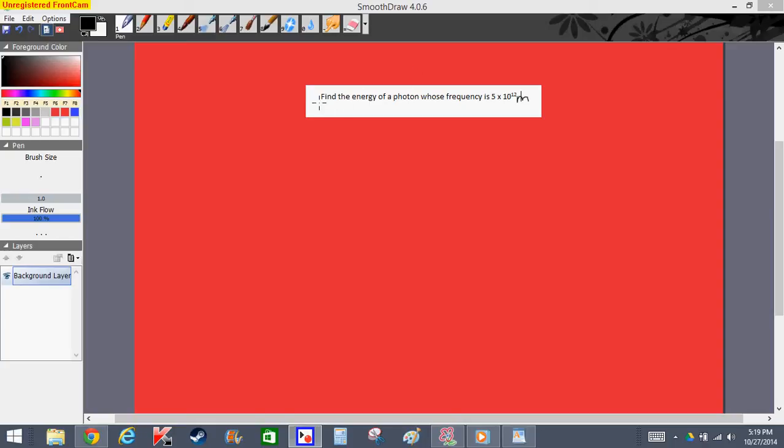We're given a problem that states: find the energy of a photon whose frequency is 5 times 10 to the power of 12. Right off the bat, we know that whenever we're talking about energy, we're going to use the equation E equals hν, where E is the energy in joules, H is Planck's constant, which is 6.626 times 10 to the negative 34th joule seconds.